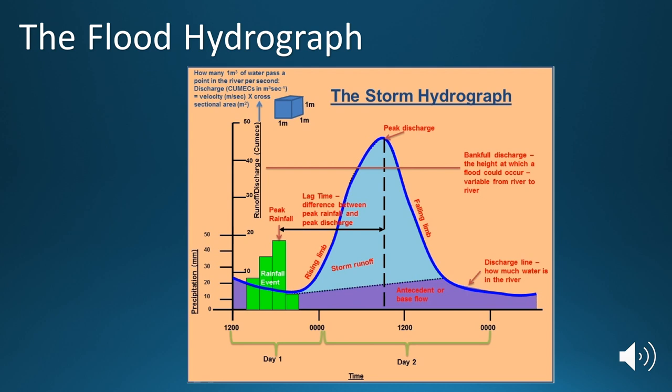This obviously changes from river to river, dependent on many different factors. Now, what we also need to know is what controls the time that it takes for that peak rainfall to occur and that peak discharge to occur. What controls the lag time? And I'm going to go into that in my next video. You'll find that link down in the description of this video. Thanks for watching. See you soon.